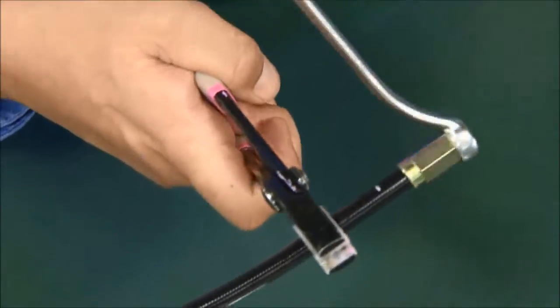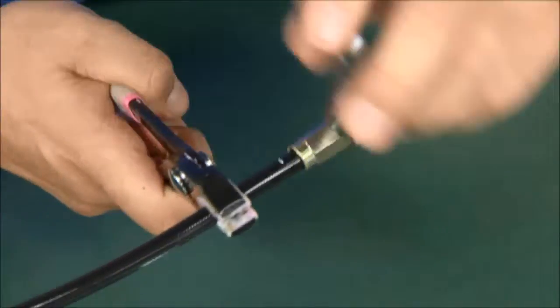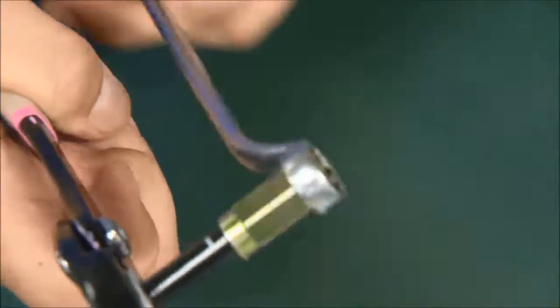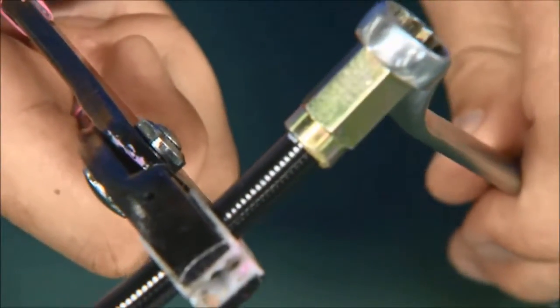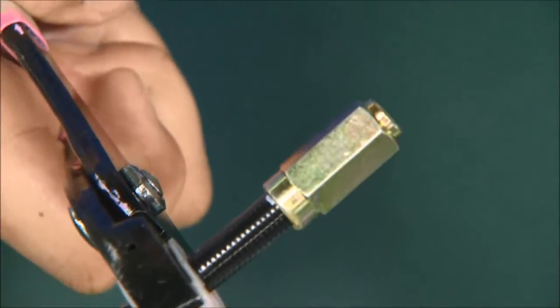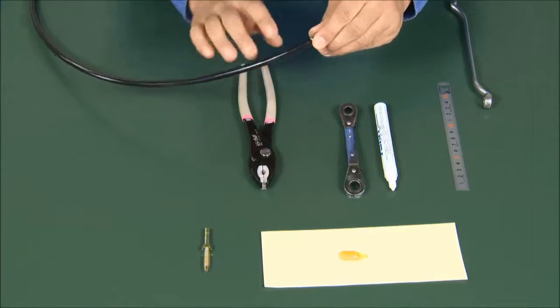Screw the hose sleeve counter clockwise with a 12mm closed wrench until it reaches the mark. Leave the 12mm closed wrench holding the sleeve.